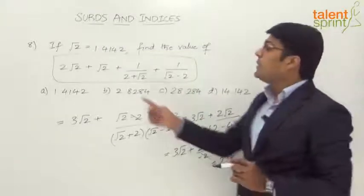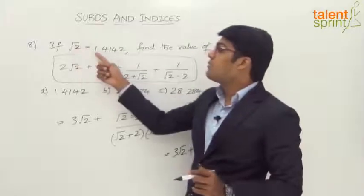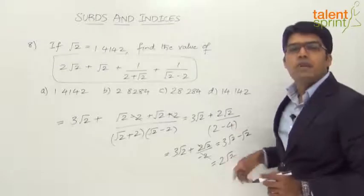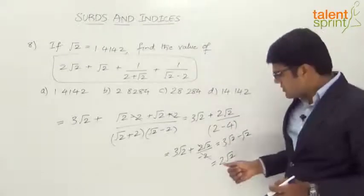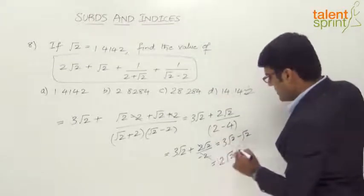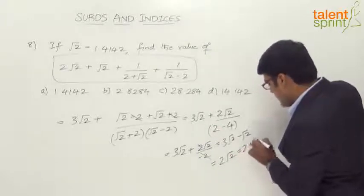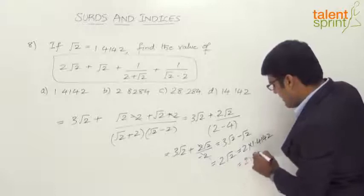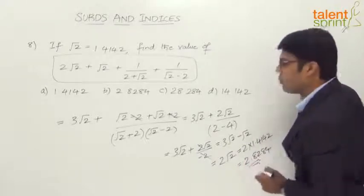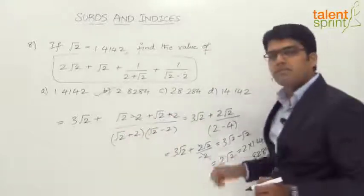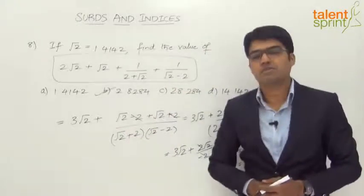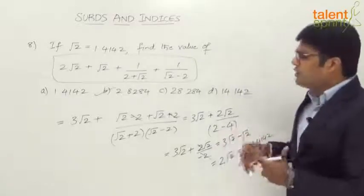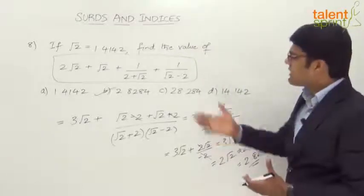Now we substitute the value of √2 = 1.4142 into the simplified result. So 2√2 = 2 × 1.4142 = 2.8284. The answer is 2.8284, which is option B. This is how we use the technique of rationalization or LCM to simplify and then substitute.